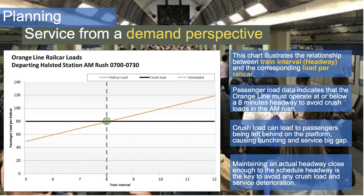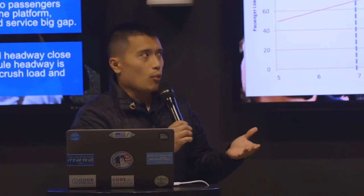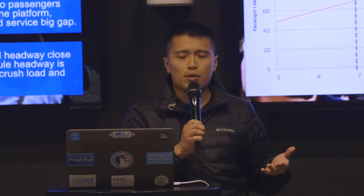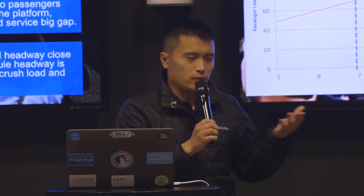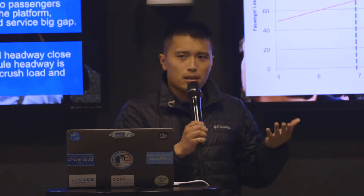According to our service standard, we don't want our rail car to have more than 80 people at any given time and location. Using ridership data, we try to estimate how frequently we need to run service to avoid overcrowding, represented by the black line on the graph. From that, we know that to avoid hitting that point we need to operate at least every 8 minutes on the orange line in the AM at the maximum loading point, which is Halsted Station. Currently it is scheduled at 7 minutes to give ourselves a little buffer and provide a better customer experience.